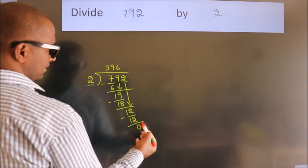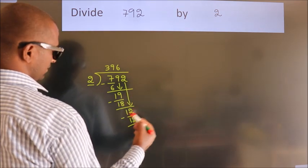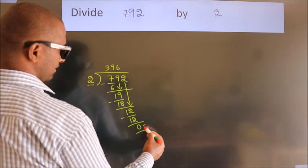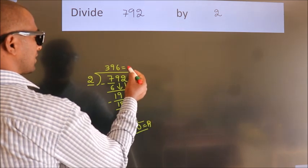After this, no more numbers to bring it down. So we stop here. This is our remainder. This is our quotient.